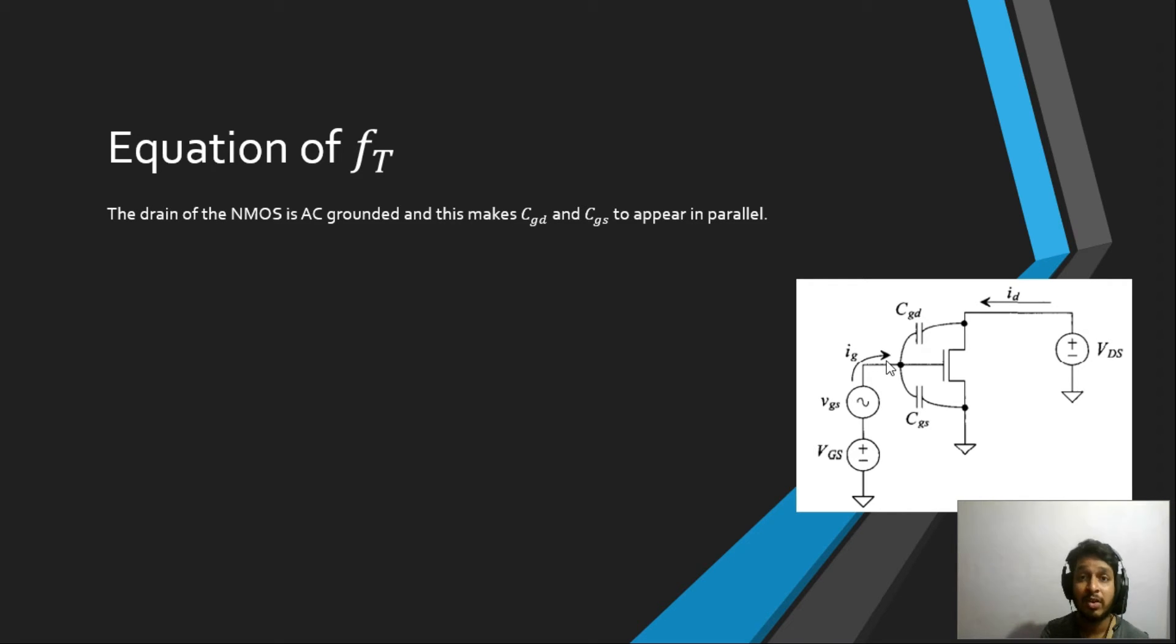These two capacitances are in parallel, and the current IG is flowing through that, and the voltage is VGS, the AC voltage. If we want to derive the equation, we want to know what's the relationship between the current and the voltage when there is a pure capacitor. By the definition of capacitor, what's a capacitor? A capacitor is a component—a physical or electrical component—whose charge is proportional to its voltage.